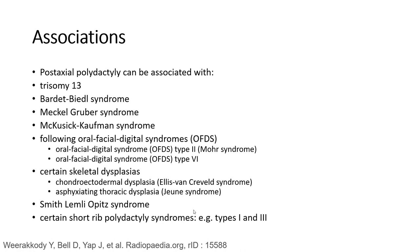Post-axial polydactyly can be associated with trisomy 13, Bardet-Biedl syndrome, Meckel-Gruber syndrome, Kustig-Gaumann syndrome, oral-facial-digital syndrome type 2, oral-facial-digital syndrome type 6, certain skeletal dysplasias, chondroectodermal dysplasia, Ellis-van Creveld syndrome, asphyxiating thoracic dysplasia, Smith-Lemli-Opitz syndrome, and certain short-limb polydactyly syndromes such as type 1 and type 3.